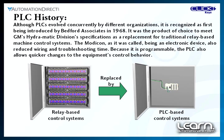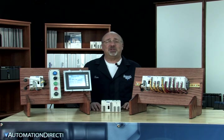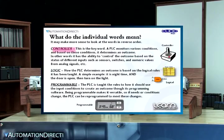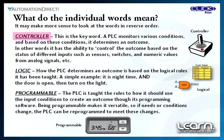Making the same changes on relay-based control systems meant equipment would have to be shut down for long periods of time to perform extensive rewiring. The PLC also has the advantage of taking up less panel space and consuming less energy. What do the individual words in PLC mean? It may make more sense to take the words in reversed order.